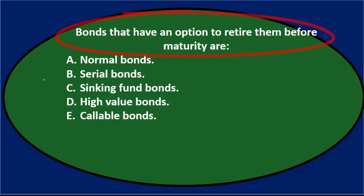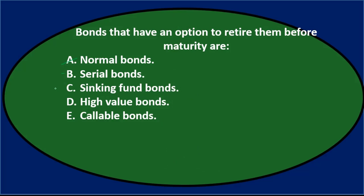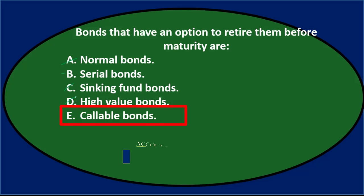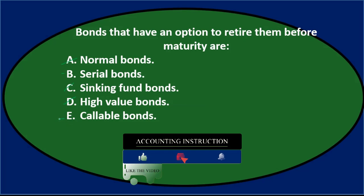Option A — normal bonds: that doesn't sound like a recognized term, so probably not. Option B — serial bonds: that sounds familiar as a type of bond, so we'll keep it. Option C — sinking fund bonds: that doesn't seem right. Option D — high value bonds: that sounds more like an investing term, not a bond type we've covered. Option E — callable bonds: that sounds familiar, so we'll keep E. We're left with B and E.